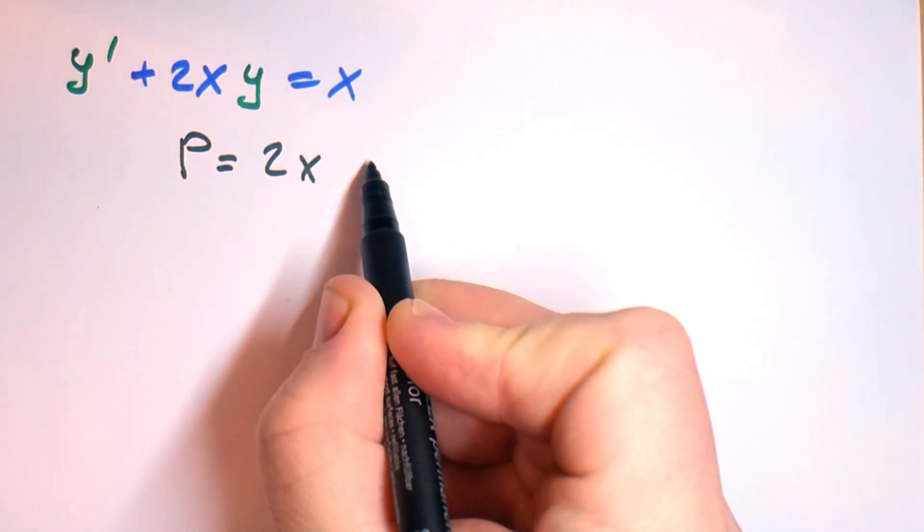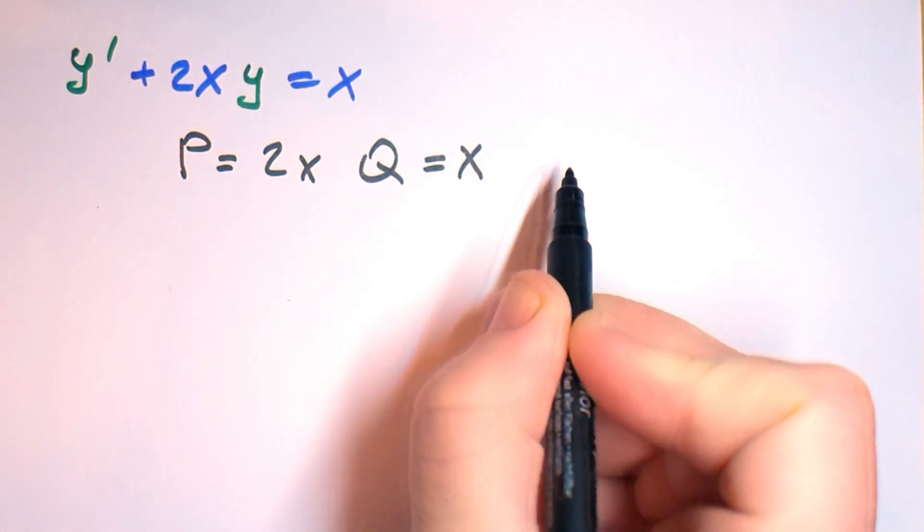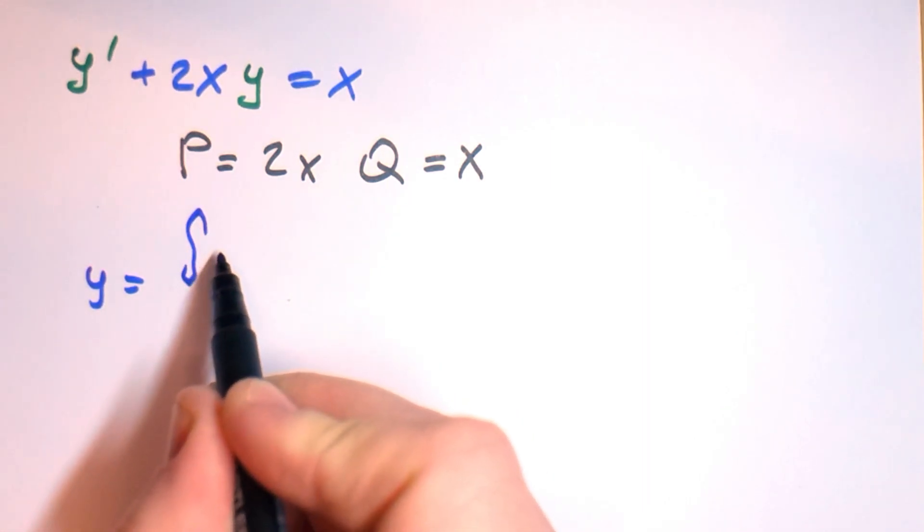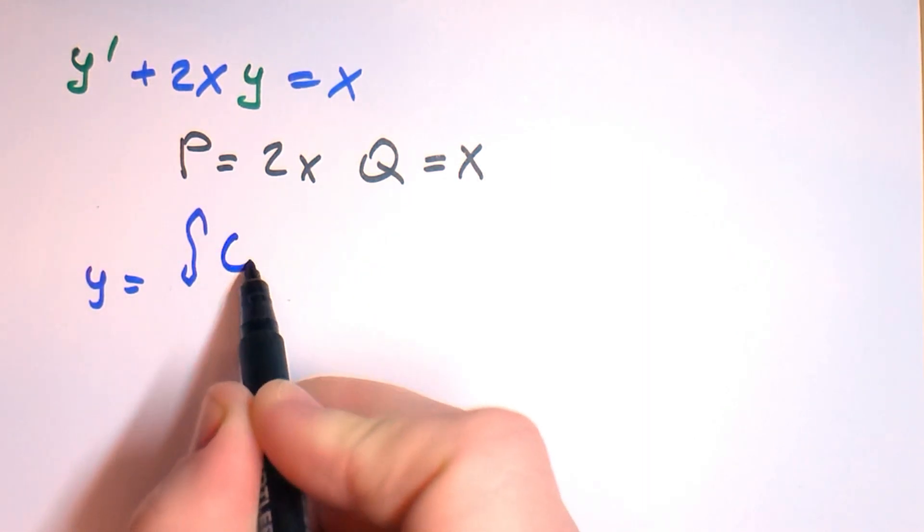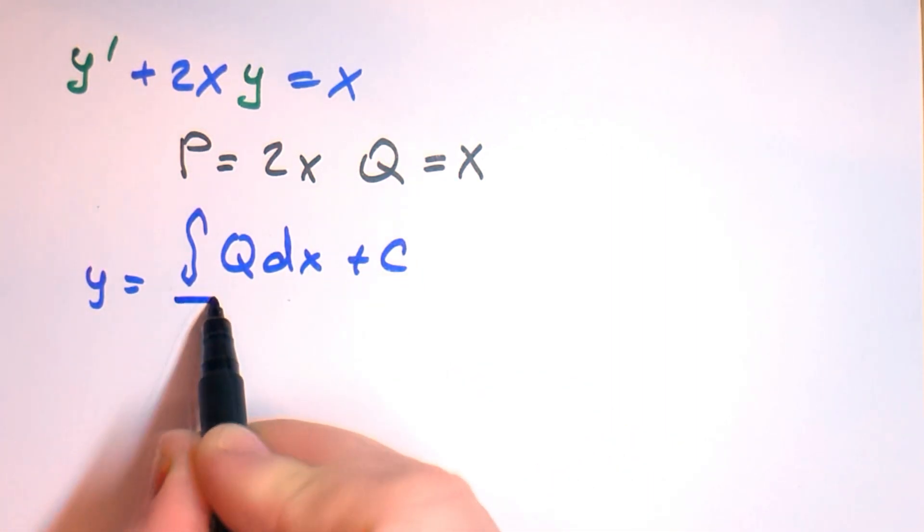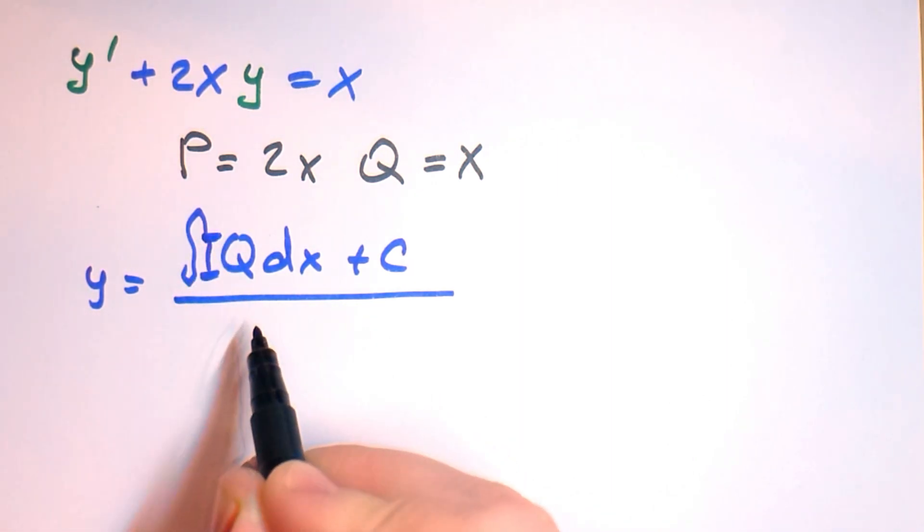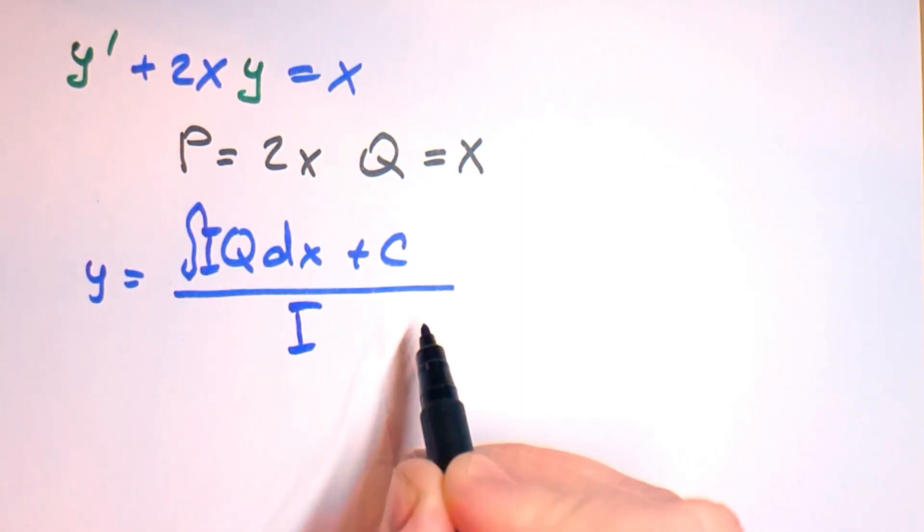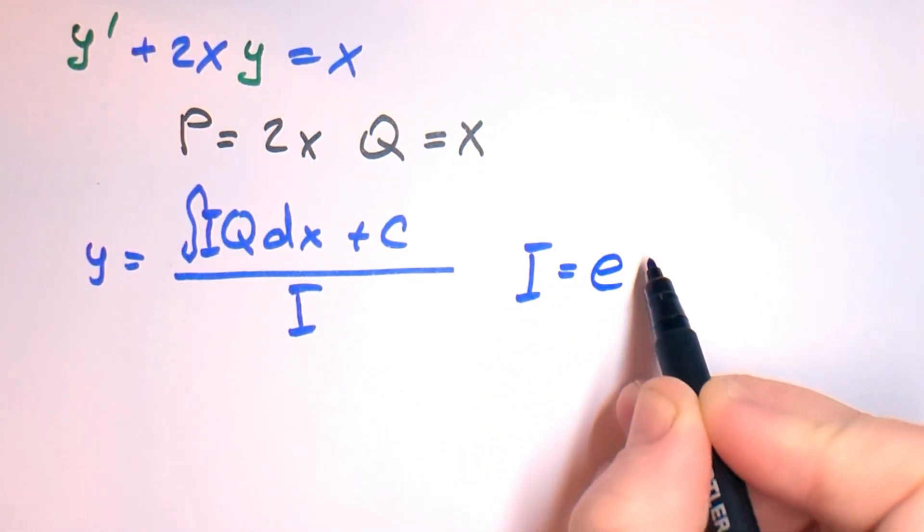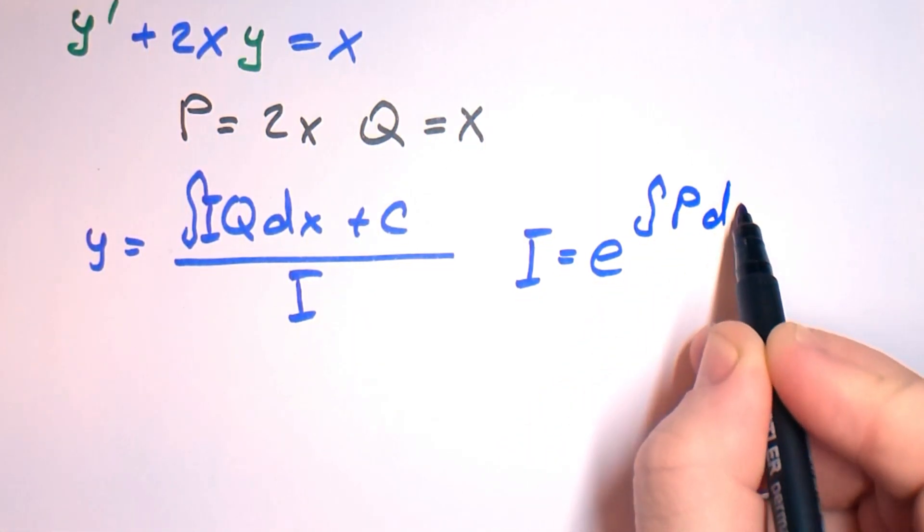First of all, if you remember the main formula to do this, we should say that function p equals 2x and function q equals x. And the general equation is y equals integral of q times I dx plus c divided by I, where I is the integration factor and equals e to the power of integral of p dx.